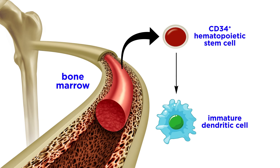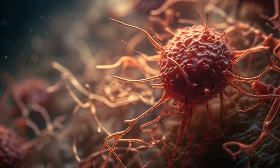Immature DCs are continuously produced from CD34+ hematopoietic stem cells within the bone marrow and are found within lymphoid organs, epithelia, connective tissue, and the lymph. Multiple DC subsets have been identified in both mice and humans, and the current classification is quite nebulous while also rapidly evolving.